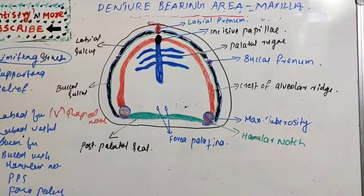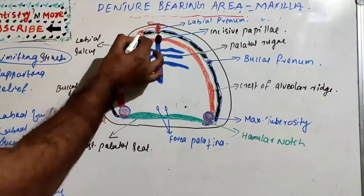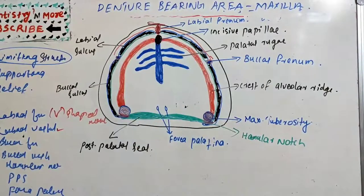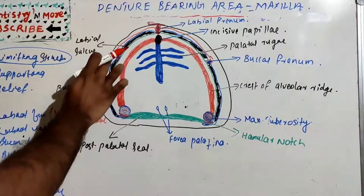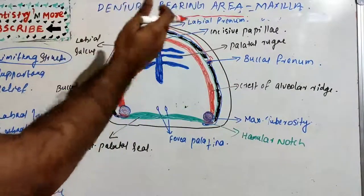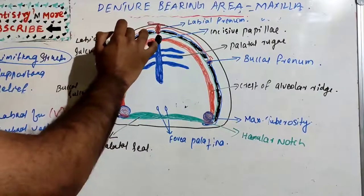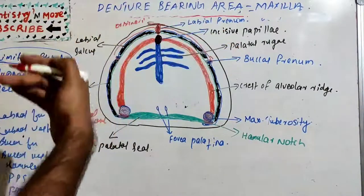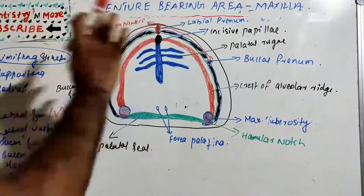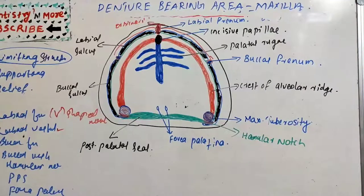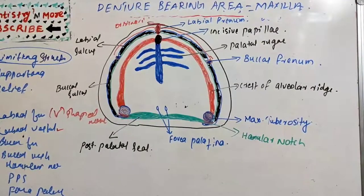The labial vestibule is bilaterally present, extending from the labial frenum to the buccal frenum, divided into right and left by the labial frenum. It is bounded anteriorly by the orbicularis oris muscle and posteriorly by the labial aspect of the alveolar ridge. The labial flange of the denture will be in complete contact with the labial vestibule to provide a peripheral seal.